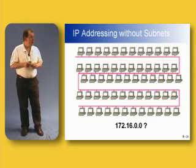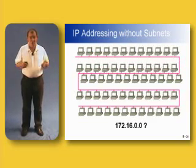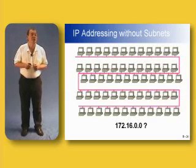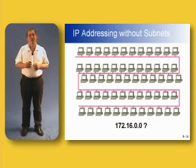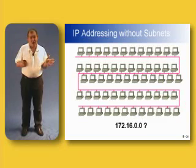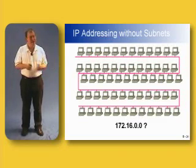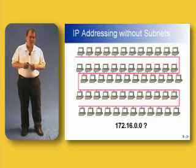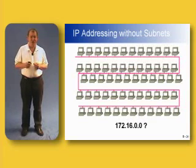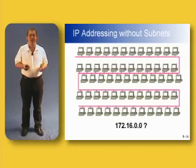So we understand the network portion and the host portion of the address. Say we're a company and we get given a class B address - 172.16.0.0. The first 16 bits are network, the last 16 bits are host, which means we've got 65,535 host addresses available. So what if we grab the longest piece of Ethernet wire you've ever seen and attach 65,000 hosts to it? Wrong. Remember collisions - we've now got one enormous collision domain. All those PCs and servers are contending for the same piece of wire and bandwidth, causing far too many collisions. We're not going to get any communication going whatsoever.